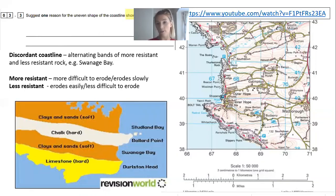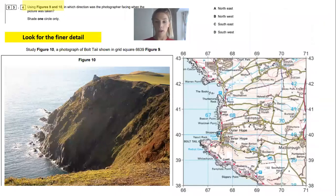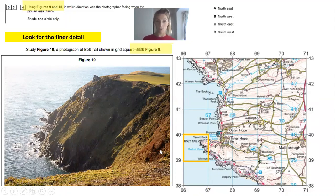If you want to go over how headlands and bays form, I'd recommend the video in the top right. Now let's go to question 3.4. This question asks you to use both figures — figures 9 and 10 — to decide which direction the photographer was facing when they took the picture. Figure 10 gives you the grid reference 6639, so you go along the corridor 66, up to 39 — that's the bottom left corner of the box you're interested in.